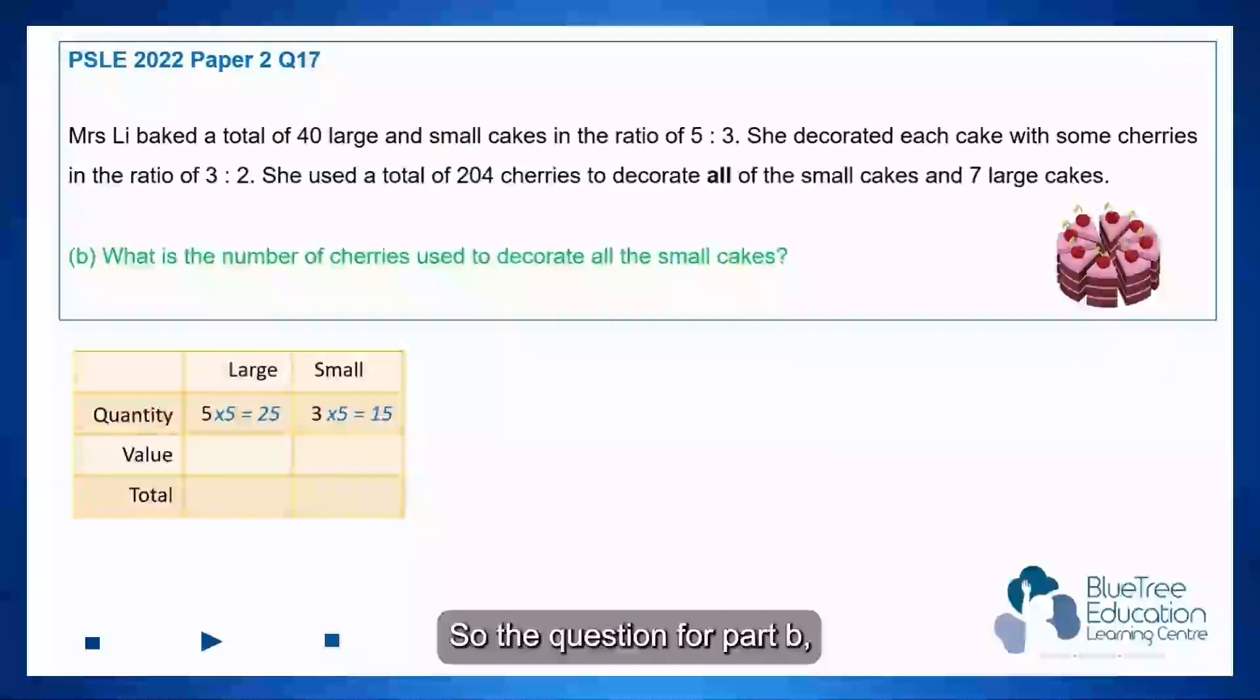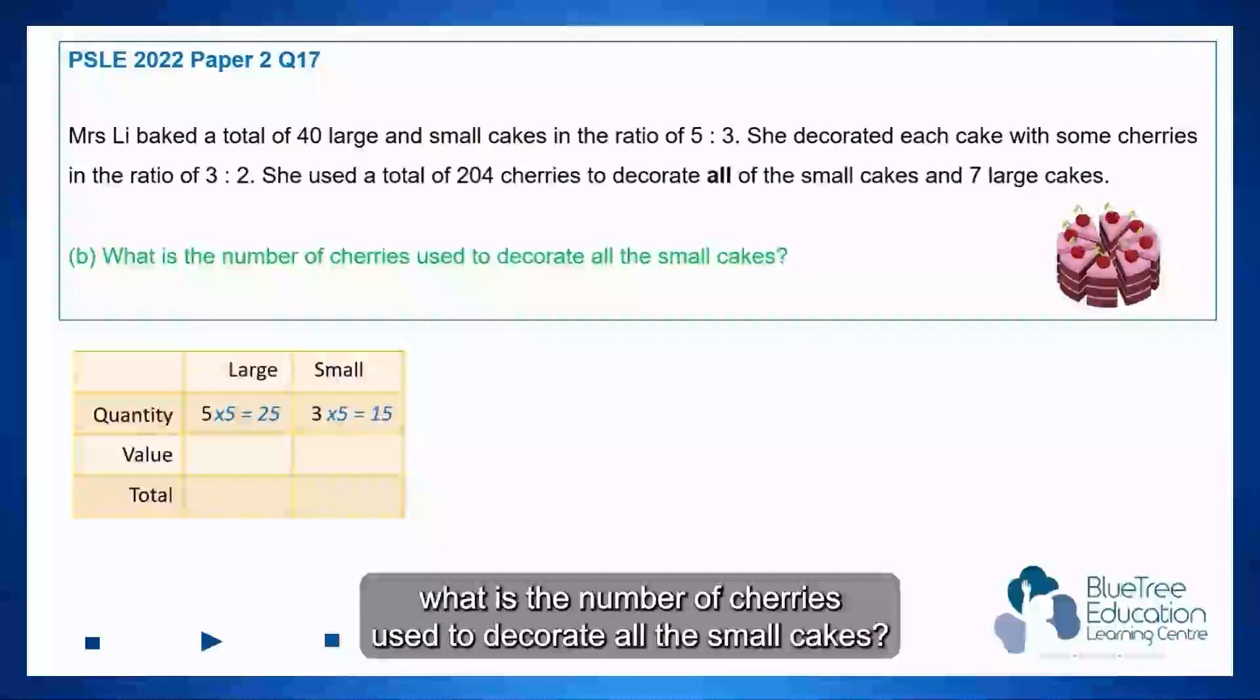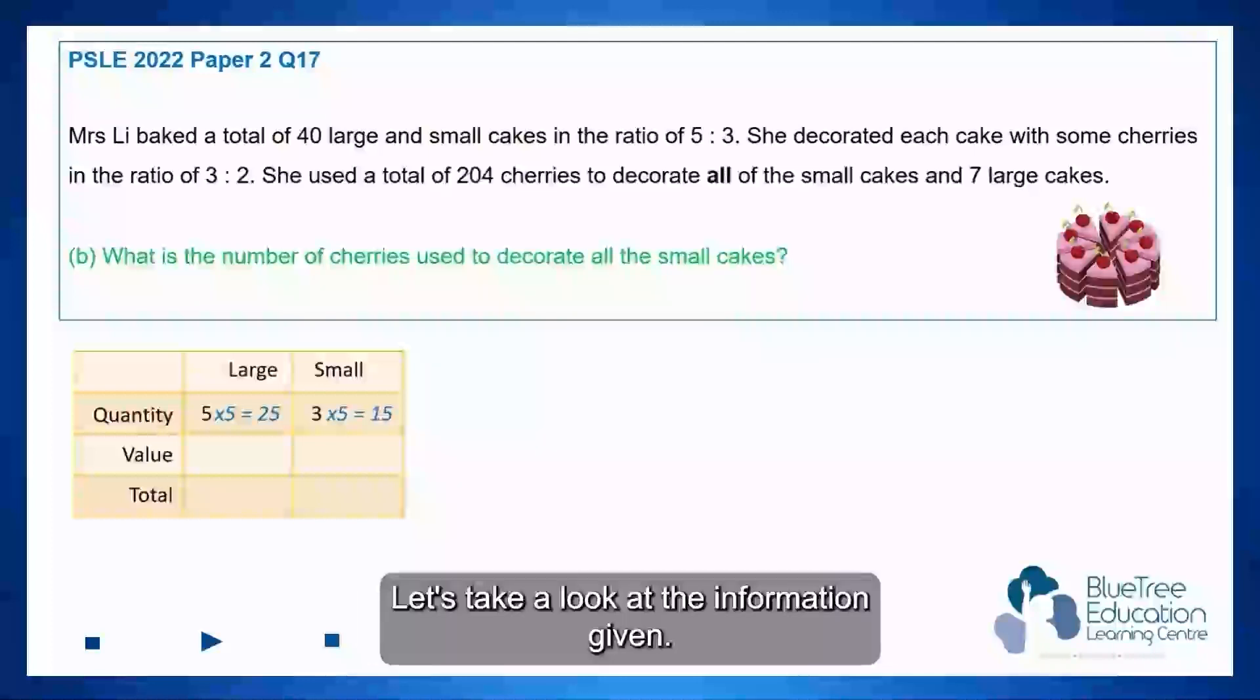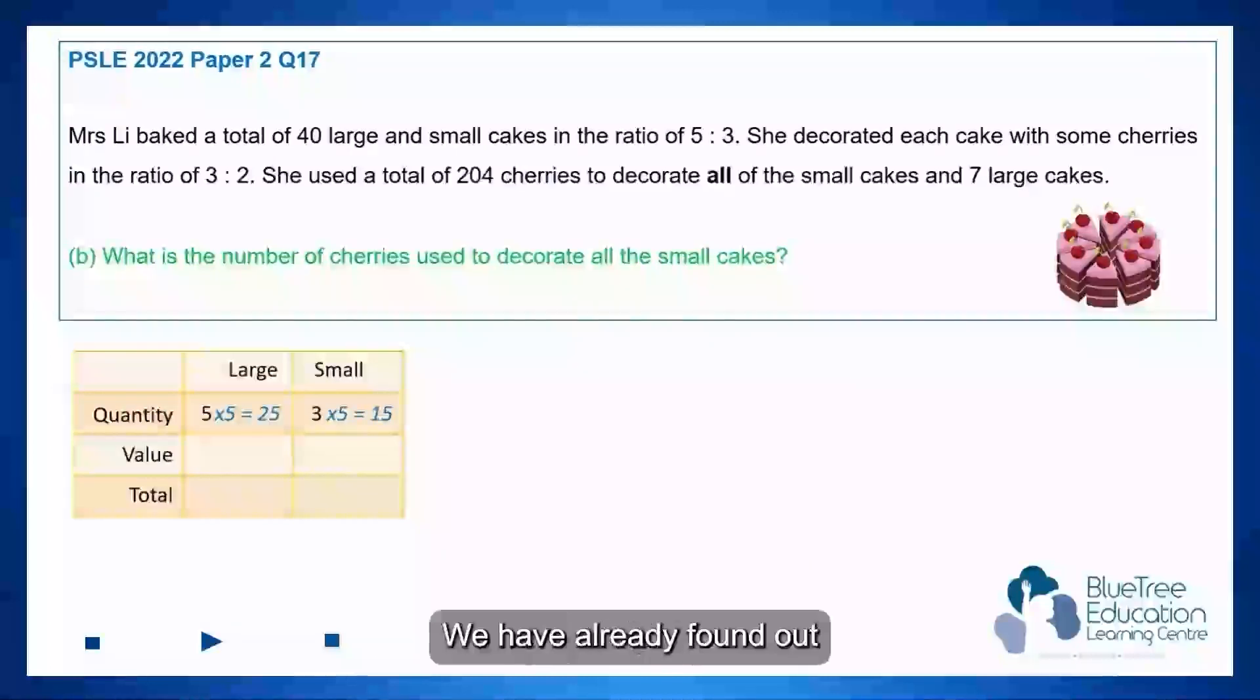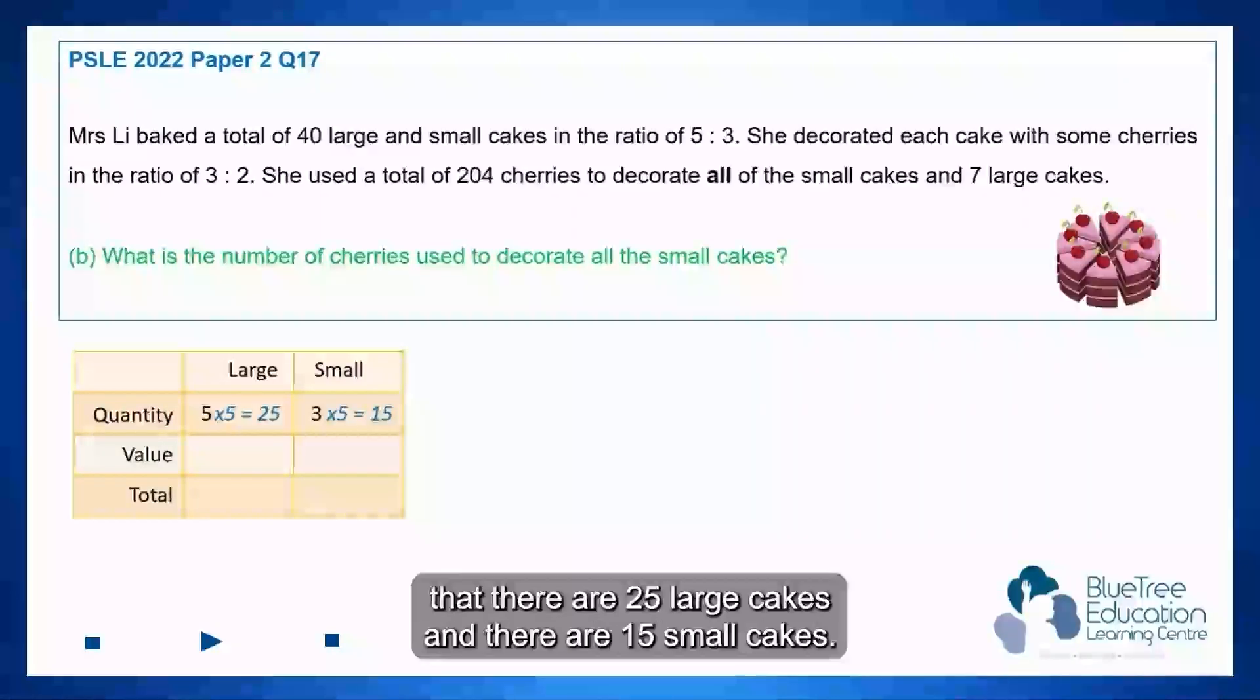So the question for part B, what is the number of cherries used to decorate all the small cakes? Let's take a look at the information given. We have already found out that there are 25 large cakes and there are 15 small cakes.